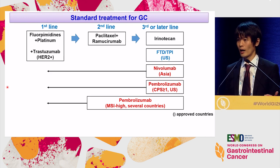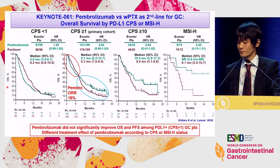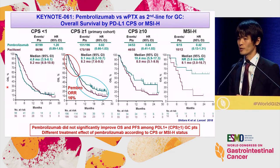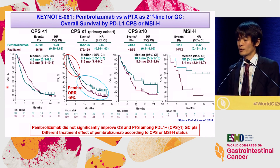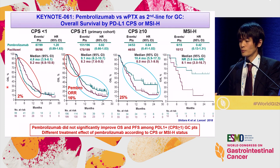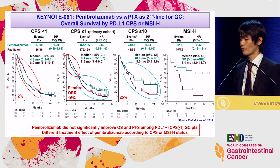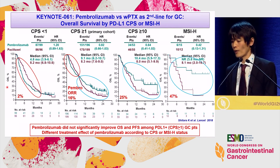Not a few trials tried to evaluate upfront checkpoint inhibitors in earlier lines of treatment. Keynote 61 could not show improvement in overall survival with Pembrolizumab in the PD-L1-positive CPS1 population. Survival curves clearly crossed. Moreover, PD-L1-negative patients showed shorter survival with Pembrolizumab than paclitaxel. In contrast, patients with higher PD-L1 expression defined as CPS10 or MSI-high tumors showed a greater treatment effect of Pembrolizumab.